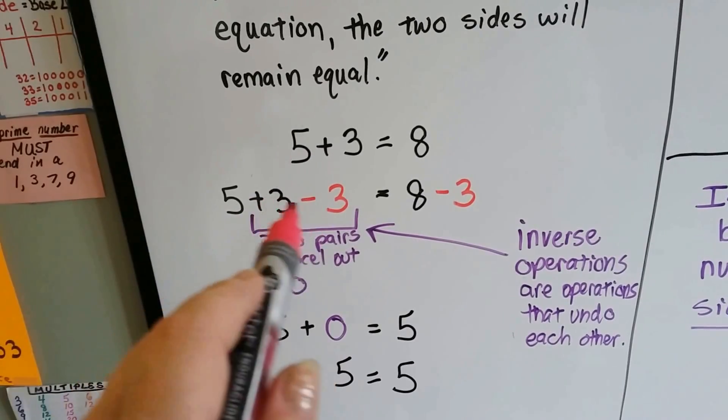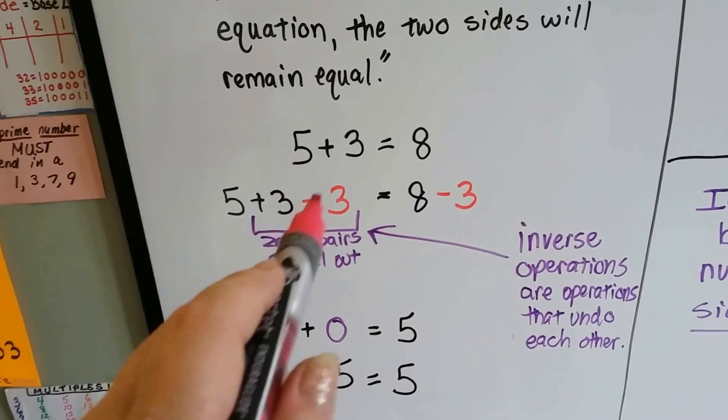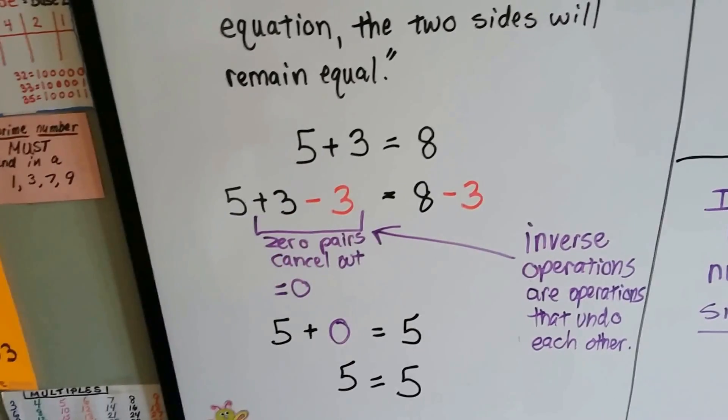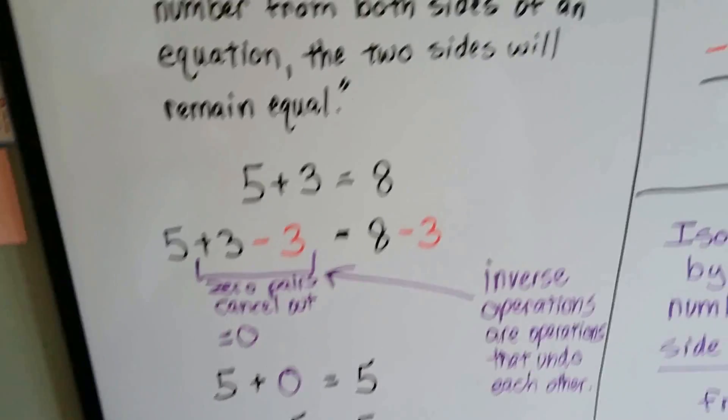And because of these inverse operations, they're operations that undo each other, we made them 0 by canceling each other out.